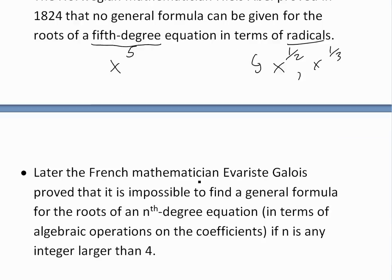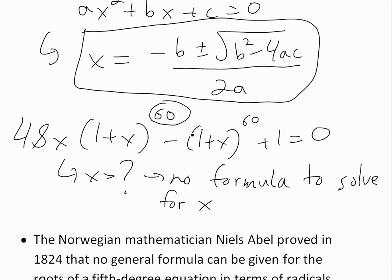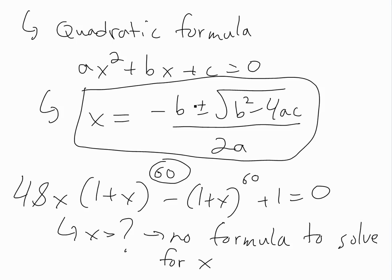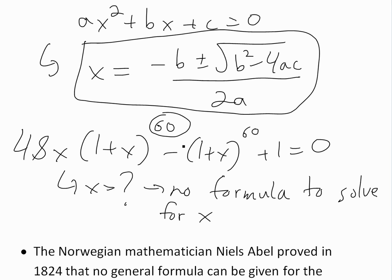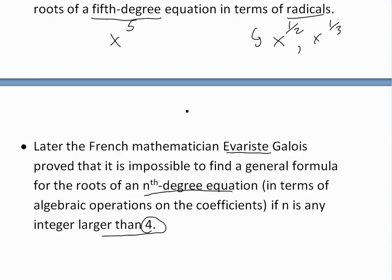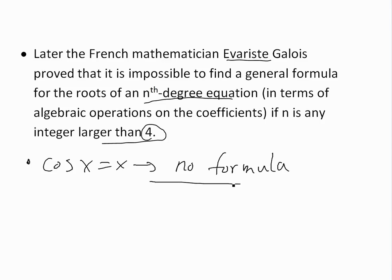Soon after, the French mathematician Évariste Galois proved that it is impossible to find a general formula for the roots of an nth degree equation in terms of algebraic operations on the coefficients — like the quadratic formula — if n is larger than 4. So basically it's actually impossible to write this kind of formula if the degree is greater than 4. And also, if you have a function like cos x equals x, there is no formula to solve for the roots of that either.